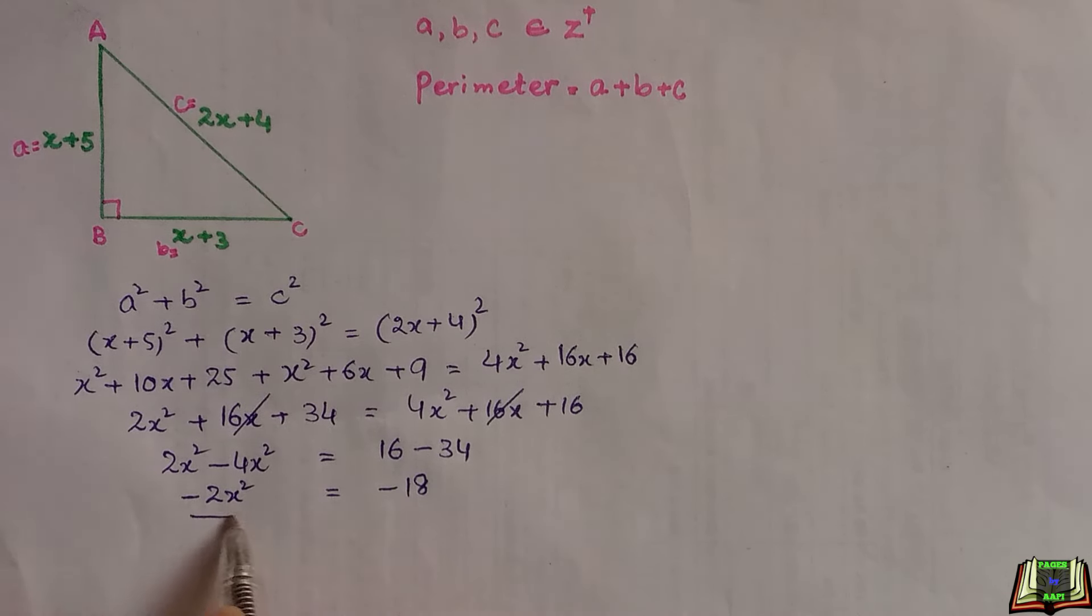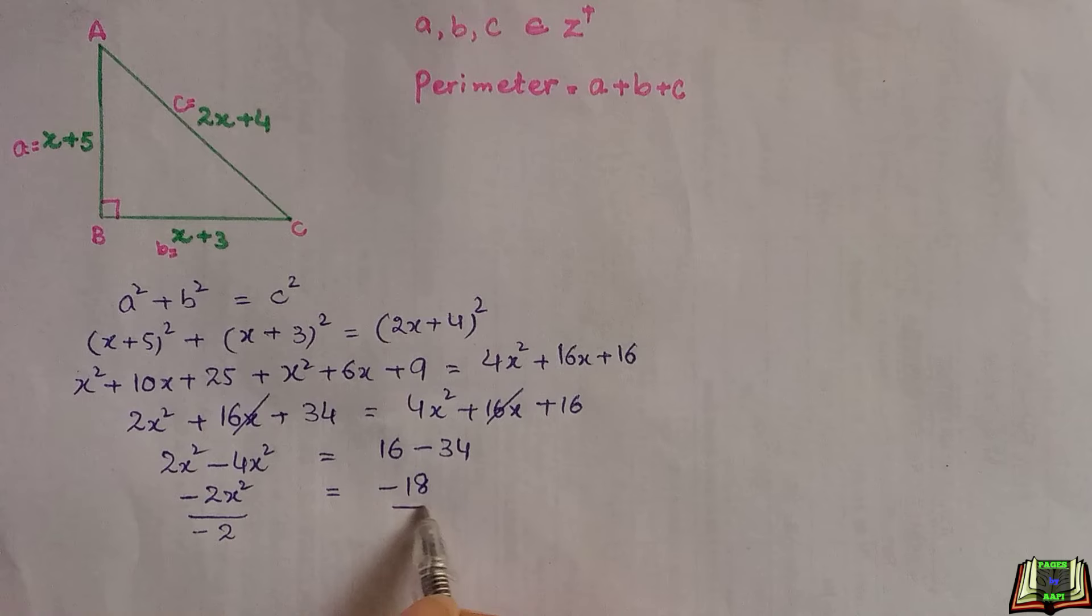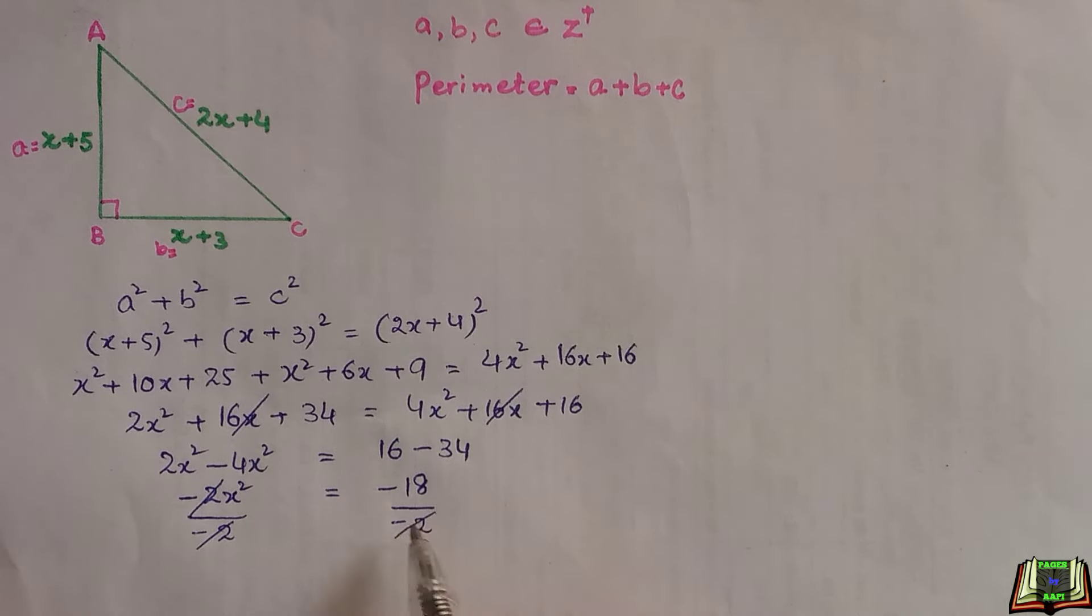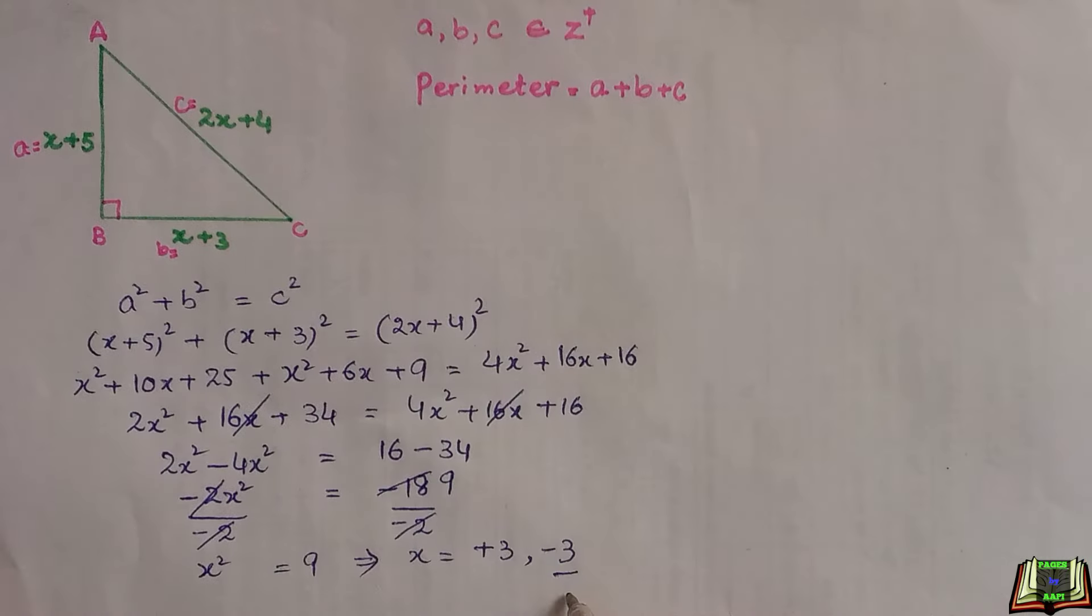Dividing both sides of this equation by minus 2, this negative 2 cancels out, and 9 times 2 is 18. x squared is equal to 9. x will be equal to positive 3 and negative 3. But we are going to ignore this negative 3 because we are going to deal with the positive integers only.